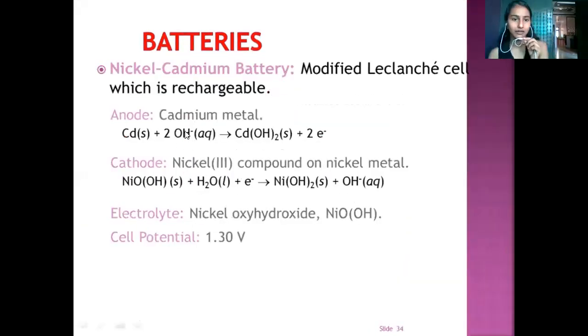Next battery is nickel cadmium battery. It is a modified Leclanche cell as well but it is rechargeable. Anode consists of cadmium metal. Cd plus 2OH minus ions form Cd(OH)2 plus 2 electrons. At cathode, nickel compound or nickel metal is used. NiO(OH) plus H2O takes one electron and forms Ni(OH)2 plus OH minus ions. Electrolyte, nickel oxyhydroxide, NiO(OH) and the cell potential is 1.30 volt.